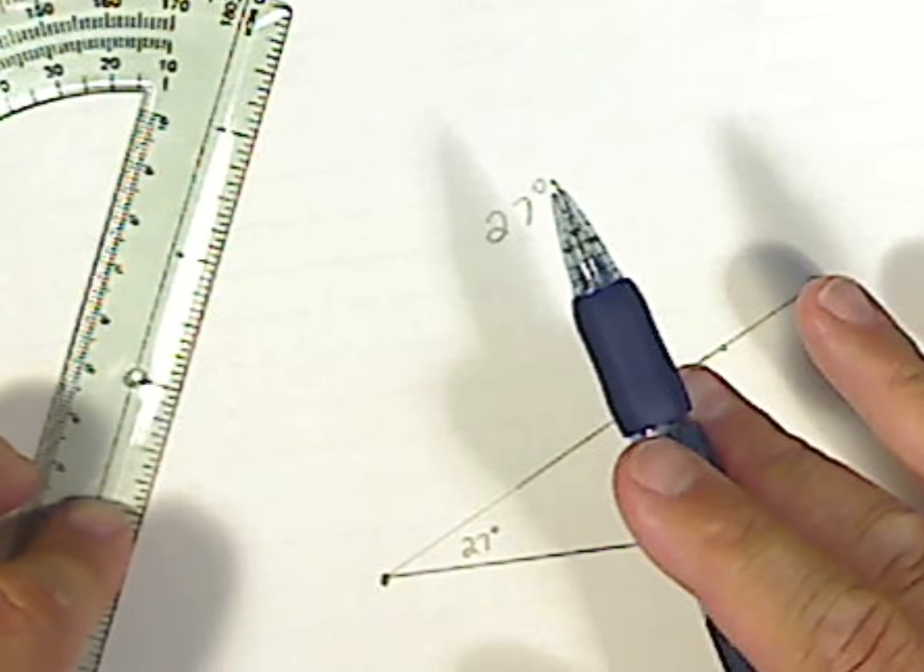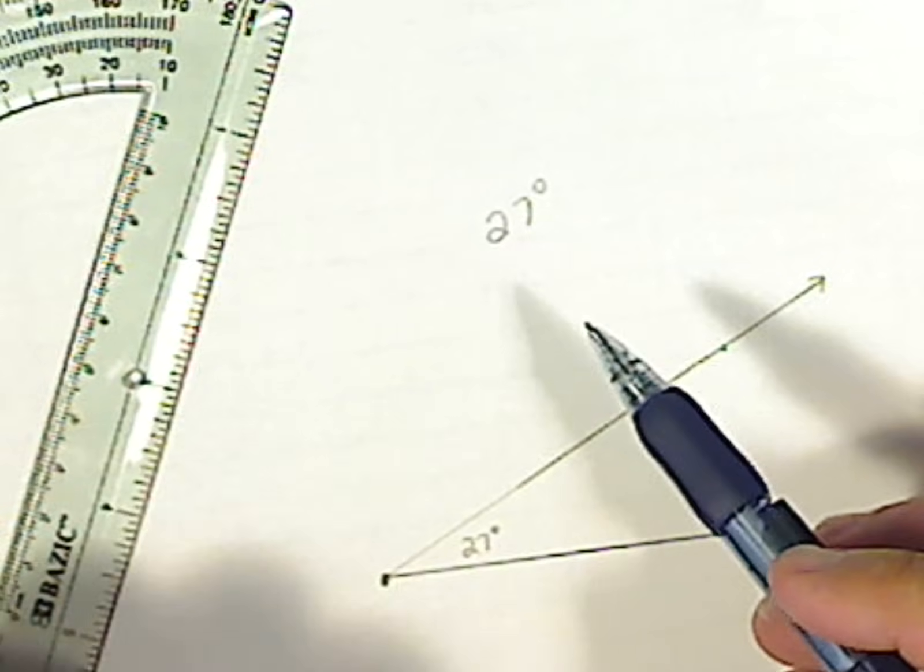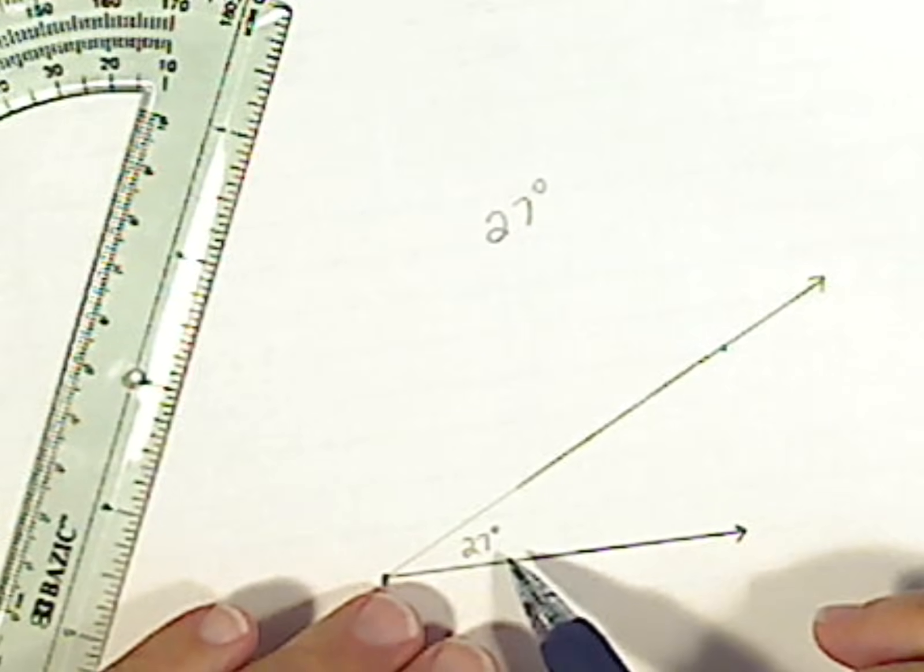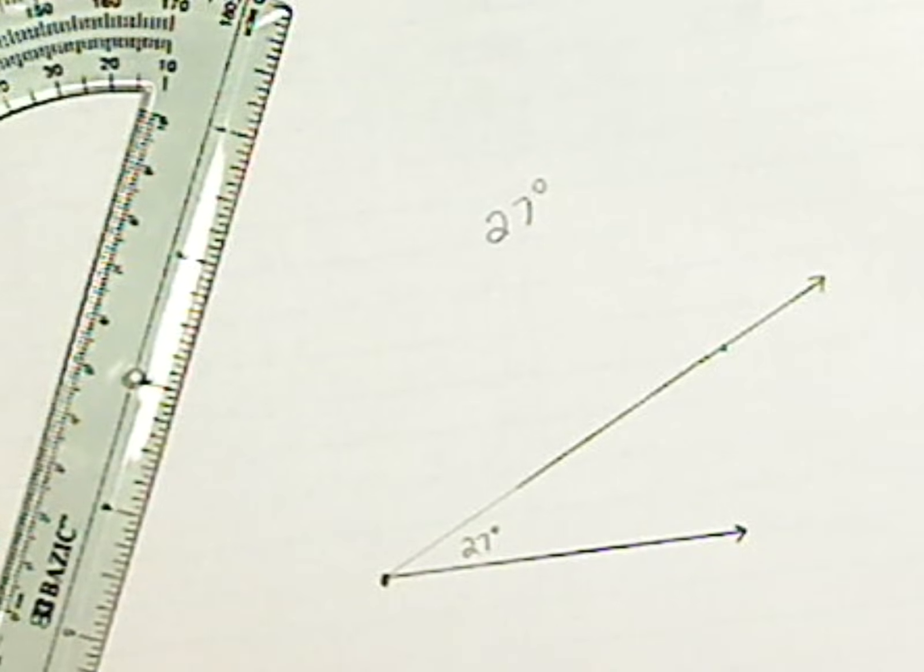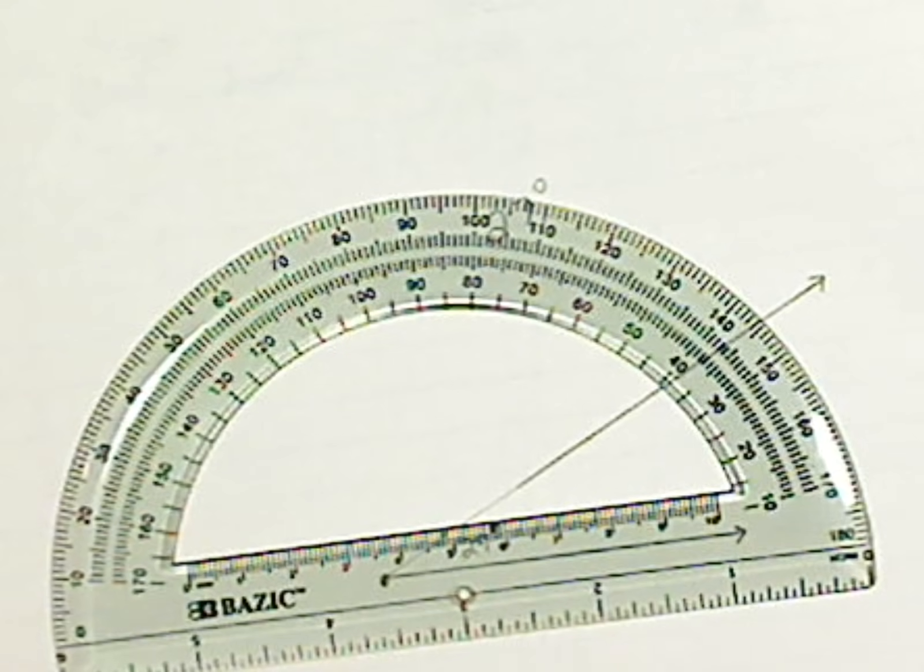A mechanical pencil is nice because the lead is thinner and more accurate. A sharpened pencil will work just fine. As long as you're within a degree of my measurements, you'll do fine on the test. And that is how you use a protractor.